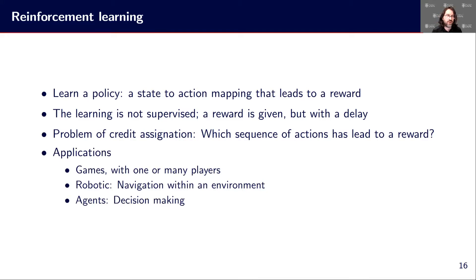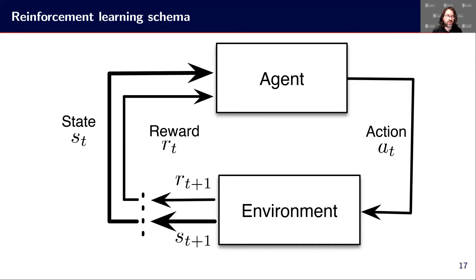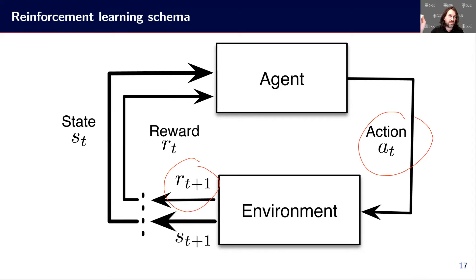In reinforcement learning, there are many applications in games with one or many players, in robotics when we need to navigate in an environment, and in decision making with agents. The flow looks like this: we have an intelligent agent that based on reinforcement learning makes an action, acting in the environment. From that action, you can get a reward — it can be immediate or about many things that happened before. We also get an update on the state, so we go from the current state ST to the next state ST+1.